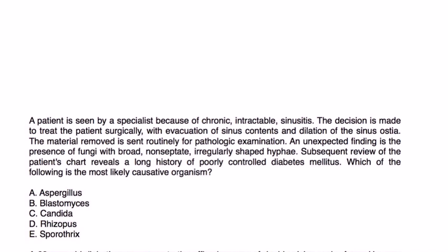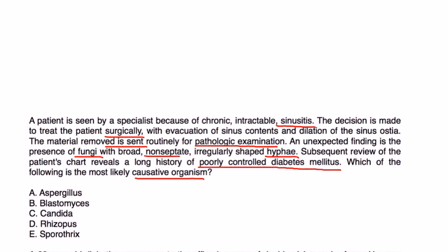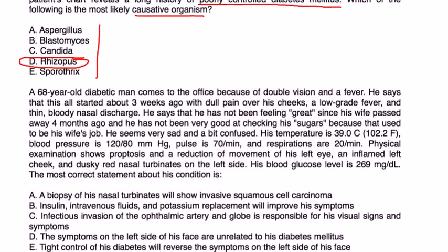Vignette 1: A patient with chronic intractable sinusitis undergoes surgical evacuation of sinus contents. Pathological examination of the removed material unexpectedly reveals fungi with broad, non-septate, irregularly shaped hyphae. Chart review shows a long history of poorly controlled diabetes. The most likely causative organism is Rhizopus.